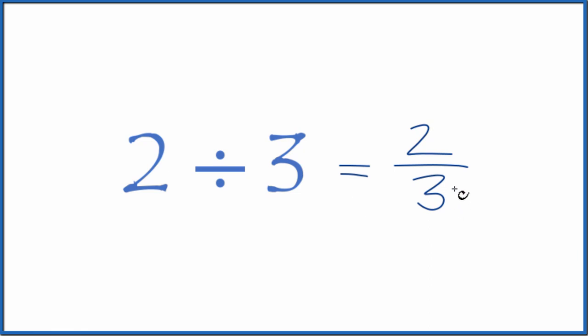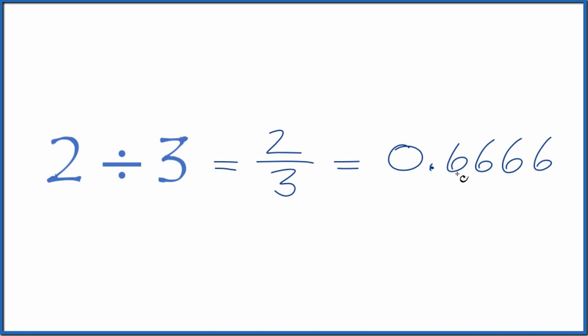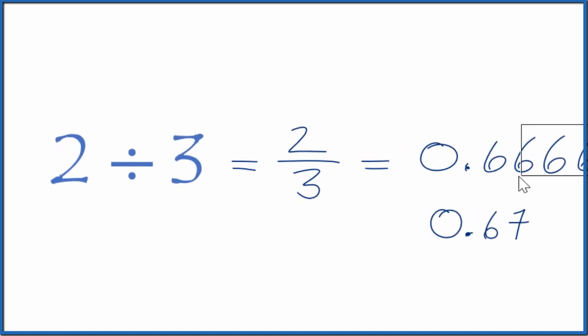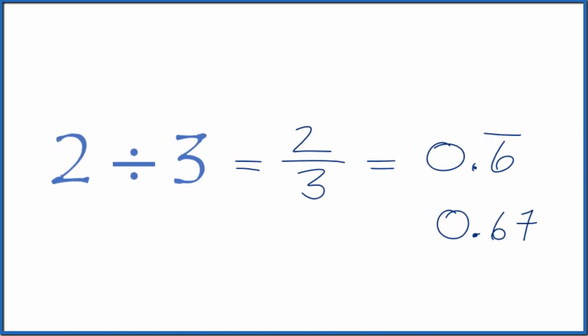You could also take your calculator out and divide two by three on a calculator. You end up with 0.6666, the rounded answer. You could also just get rid of these here and then put a bar over the six to show it keeps repeating, and that's a little bit more accurate. Depends on what your teacher wants you to do.